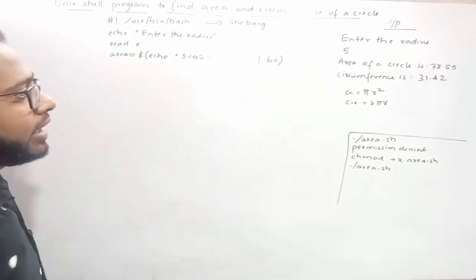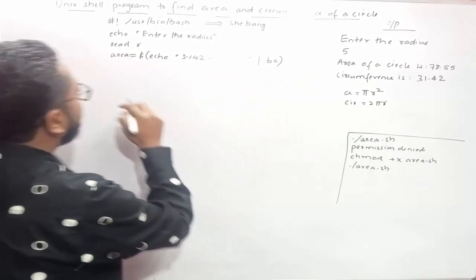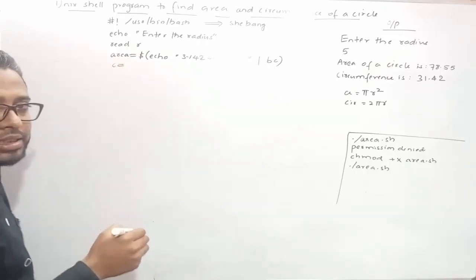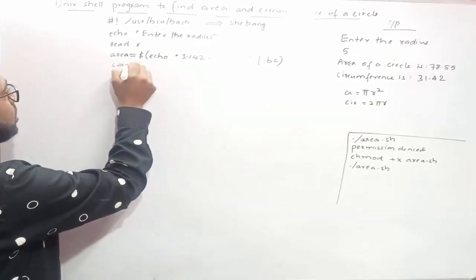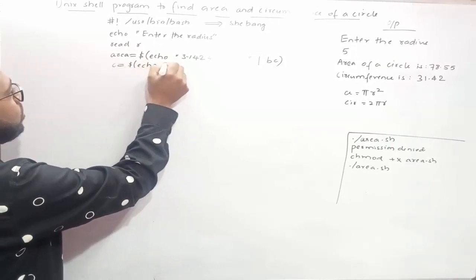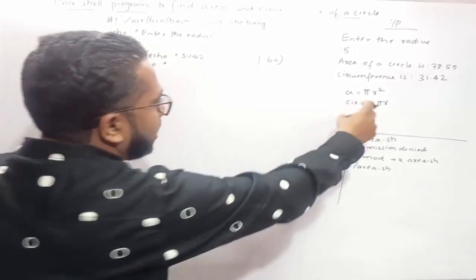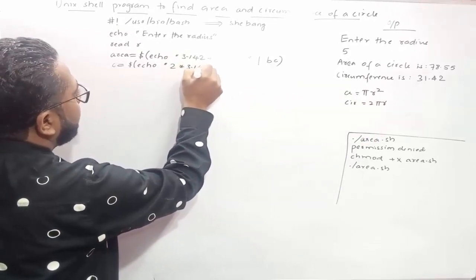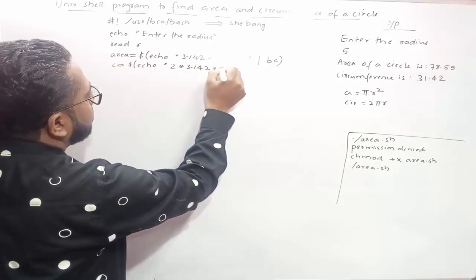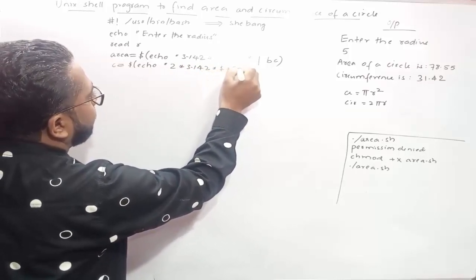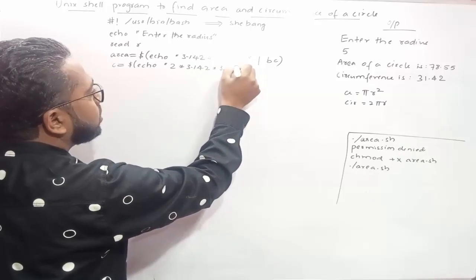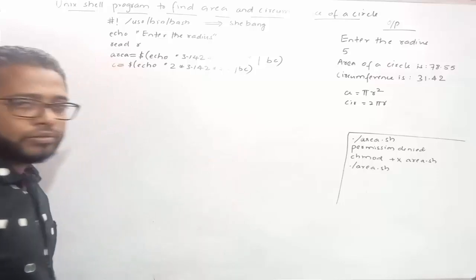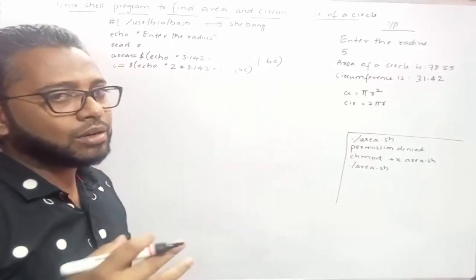Next we calculate the circumference. We create one more variable c: c=$(echo "2 * 3.142 * $r" | bc). Now both the area and circumference of the circle are calculated.